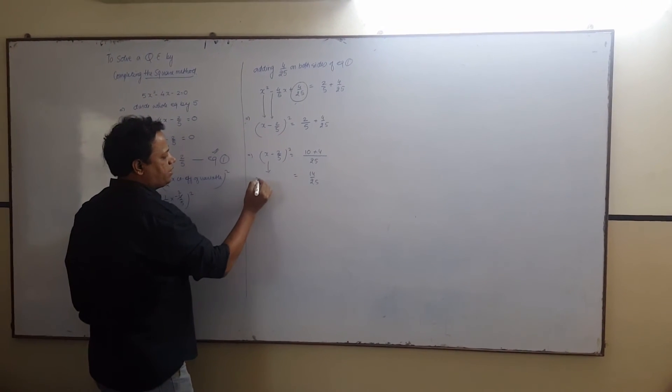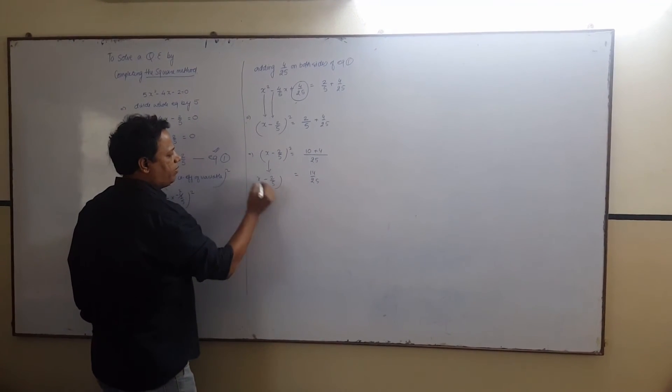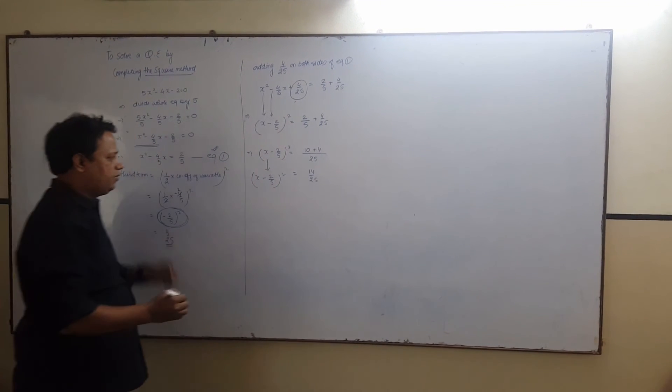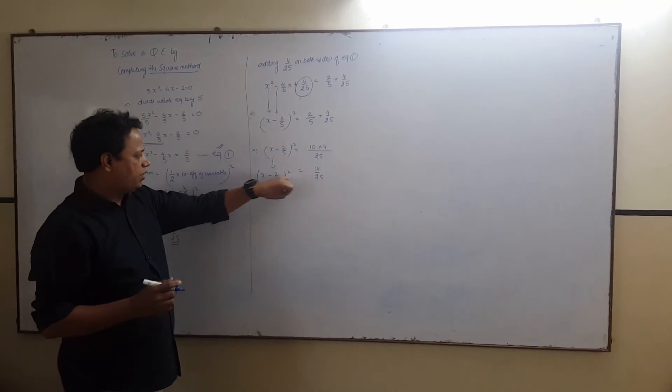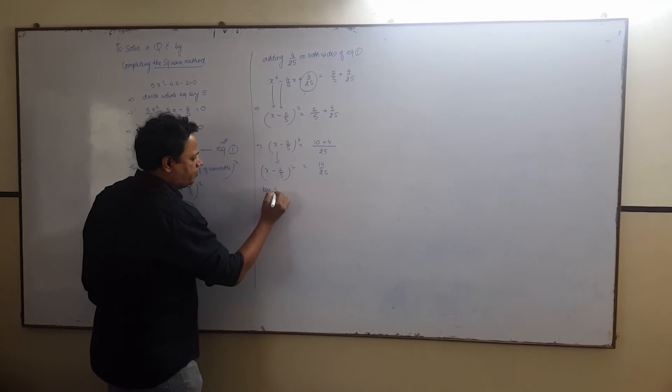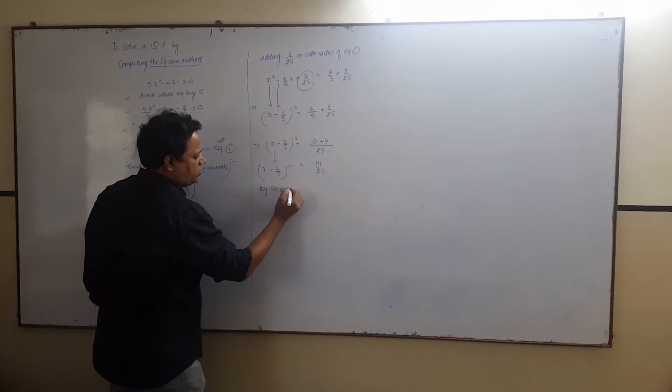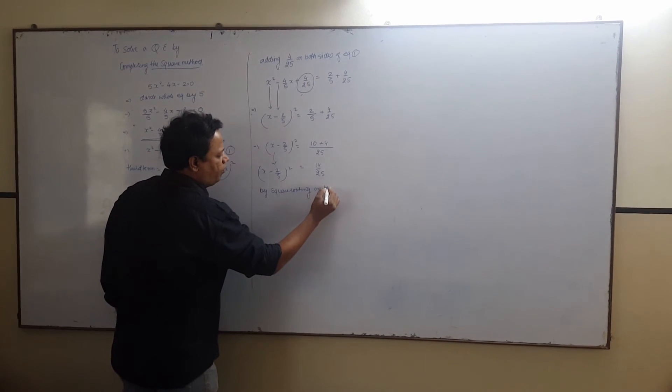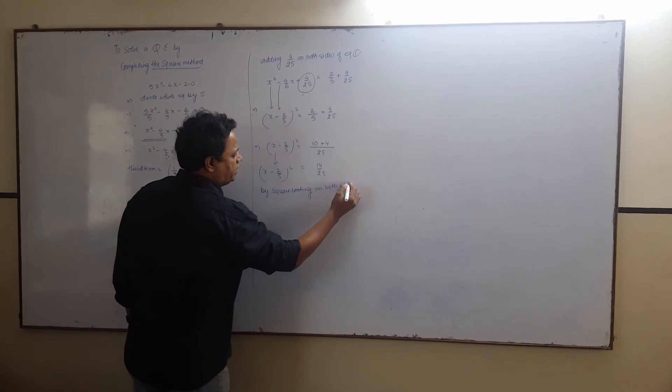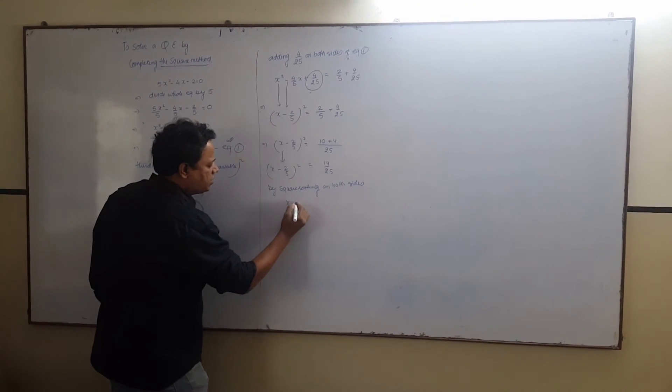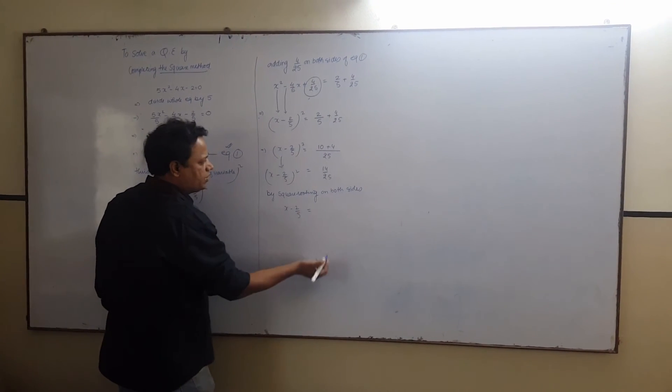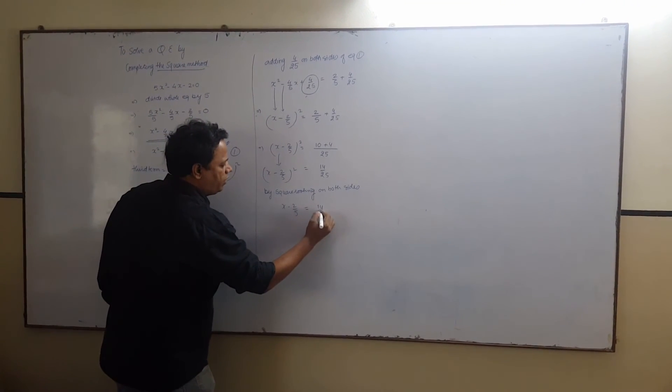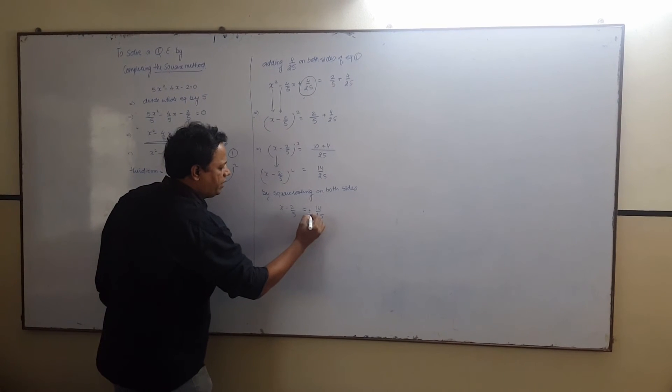This will come as it is down, x minus 2 upon 5 to the power 2. We are supposed to remove this 2. So, by square rooting on both sides. What will happen? x minus 2 upon 5 equals to 14 upon 25 plus minus root.